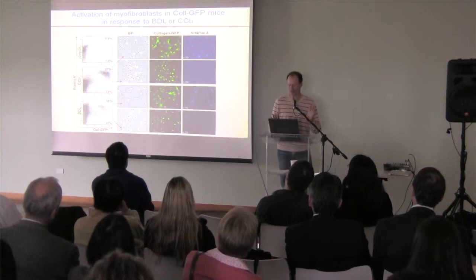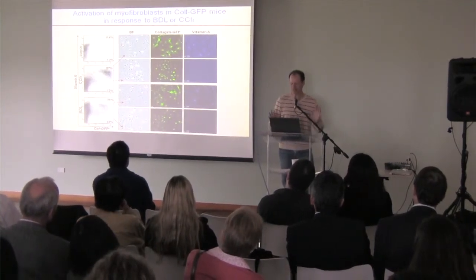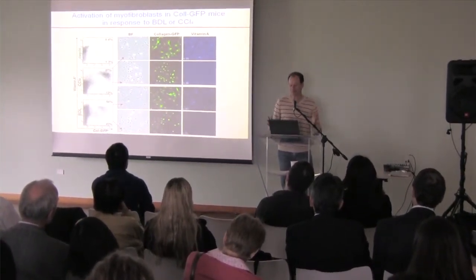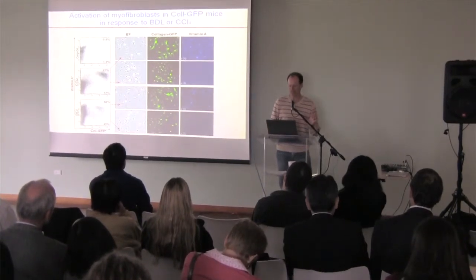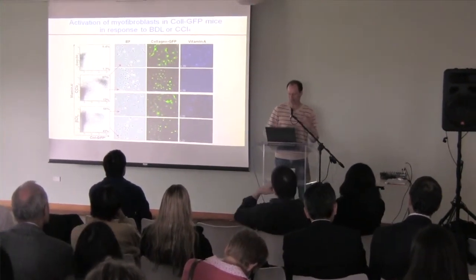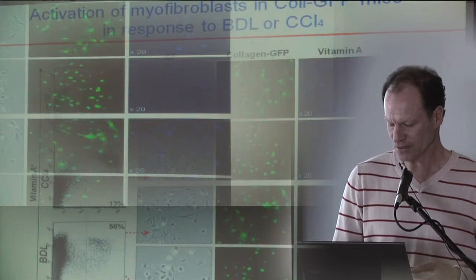The results were very different if we did bile duct ligation versus carbon tetrachloride. If we did carbon tetrachloride, we got almost exclusively vitamin A positive cells. If we did bile duct ligation, we got a mixed population, half vitamin A positive and half vitamin A negative. So we're feeling pretty good now. In hepatotoxicity, most of the myofibroblasts would be stellate cells, vitamin A positive, while in bile duct ligation, the jury's out.